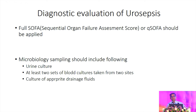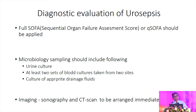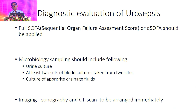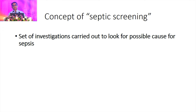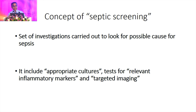Imaging in urosepsis is very important to identify the area of involvement. I would like to talk about the concept of septic screening. We all use this term, but sepsis screening is not just doing certain blood tests and cultures like tracheal secretions, urine culture, and blood culture. It involves an objective investigation for the focus, with appropriate tests, relevant inflammatory markers, and targeted imaging. When you call it sepsis screening, you have to include all three components.